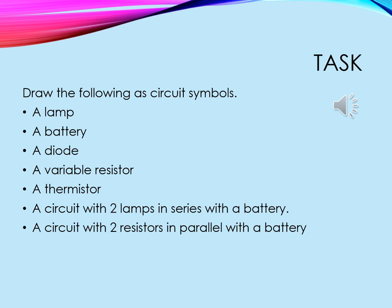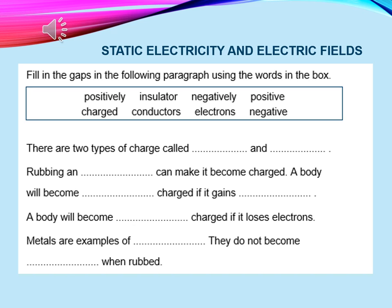Your task now that you've got all the information about the circuits is to draw a circuit diagram. Your circuit diagram needs to contain a lamp, a battery, a diode, a variable resistor, a thermistor, a circuit with two lamps in series with a battery, and a circuit with two resistors in parallel with a battery. Have a go and see what you come up with. Make sure you label them — draw, label and then do it. Unfortunately we can't do the practicals at the moment, but we will get round to doing them when you're back with us.